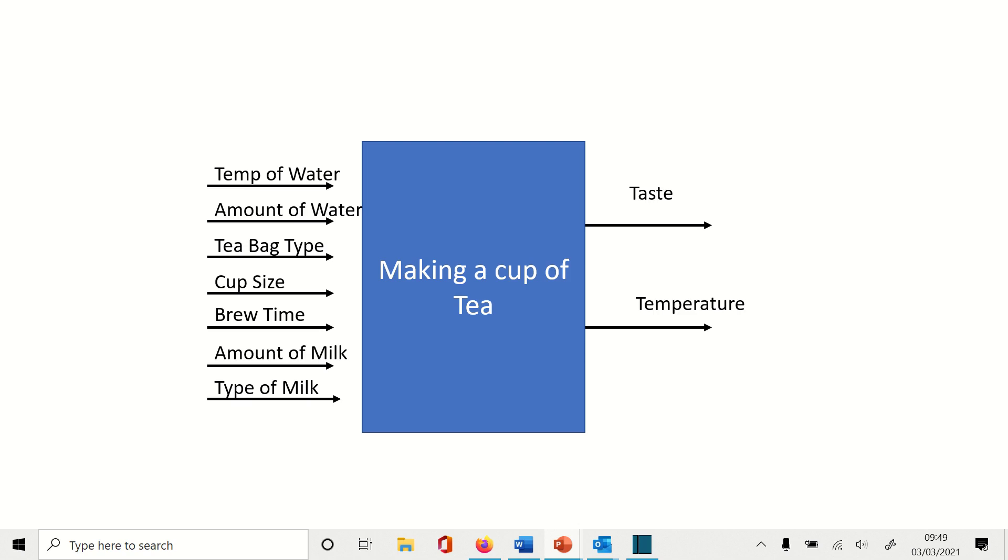Here's my version of writing a standard operating procedure. The first thing: let's get the input-output diagram loud and proud at the front of our thoughts. So here are the key inputs to making a cup of tea: the temperature of the water, the amount of water, the tea bag type, the cup size, the brew time, the amount of milk, and the type of milk.